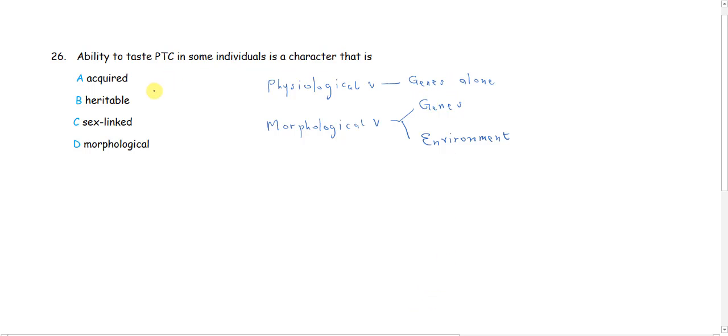Okay, so let's look at the option again. Ability to taste PTC in some individuals is a character that is... Is it acquired? If it's going to be acquired, then it should involve the environment. But is that the correct answer?